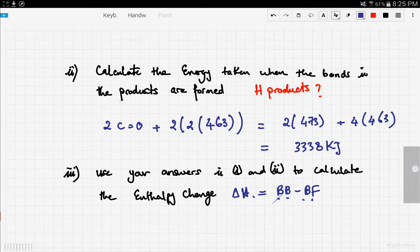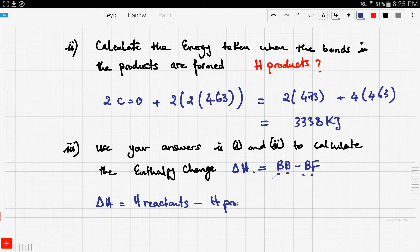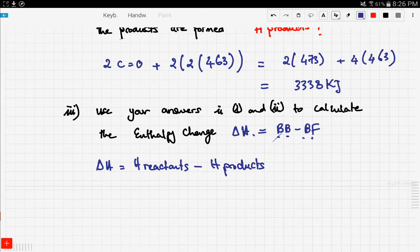So how do we calculate delta H? Well, the bonds broken are in the reactants. So delta H would be H of reactants minus H of products, okay? Now, that would be 2640 minus 3338. And it would give minus 698 kilojoules.